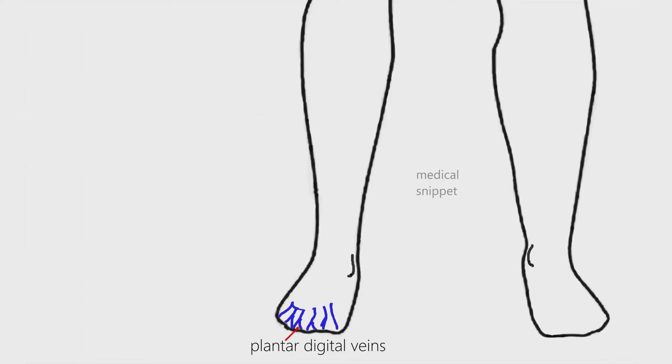In the foot, the plantar digital veins unite into plantar metatarsal veins, which empty into the deep plantar venous arch. The plantar venous arch continues as medial and lateral plantar veins, which continue as posterior tibial vein.